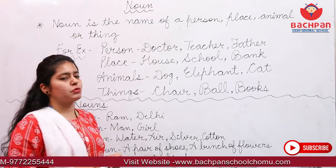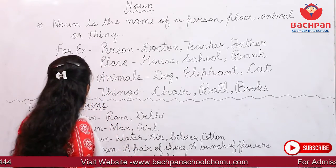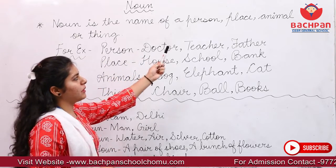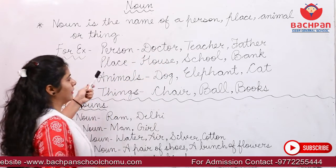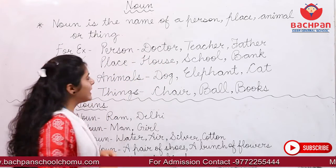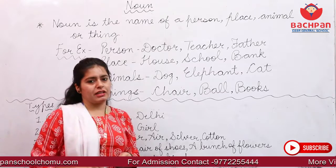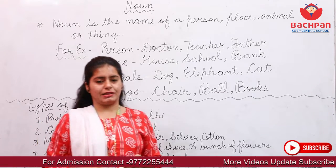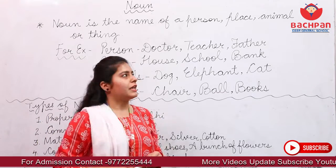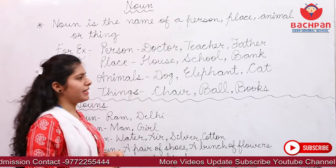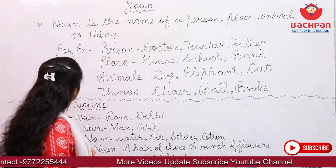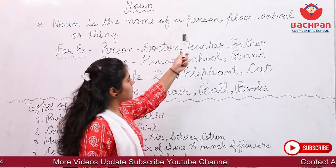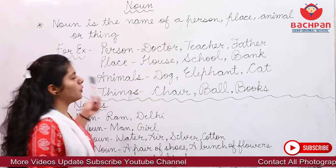Let's start with the definition. Noun is the name of a person, place, animal or thing. In Hindi, we call it Sangya — the name of a person, place, animal or thing. Same, in English, we call a person, place, animal or thing a noun.